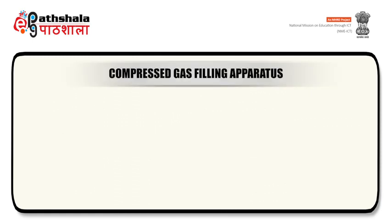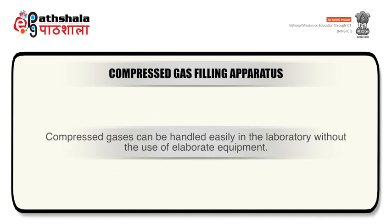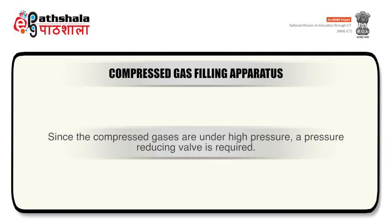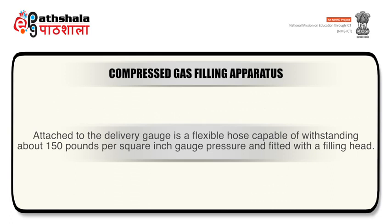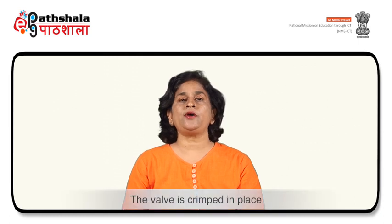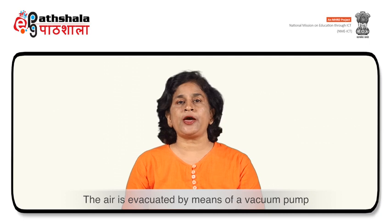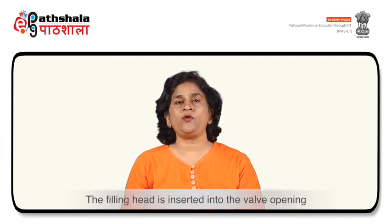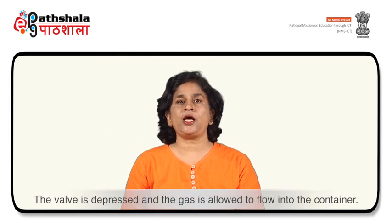Compressed gases can be handled easily in the laboratory without the use of elaborate equipment. Since the compressed gases are under high pressure, a pressure reducing valve is required. A flexible hose is attached to the delivery gauge and is capable of withstanding about 150 pounds per square inch gauge pressure, and is fitted with a filling head. More elaborate units utilize a flow indicator between the gauge and the flexible hose. Working of the equipment for filling aerosols with compressed gases involves various steps including the placement of the concentrate in the container, the crimping of the valve in place, evacuation of the air by means of a vacuum pump, insertion of the filling head into the valve opening, and the depression of the valve so that the gas is allowed to flow into the container.